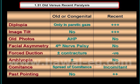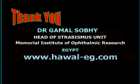In old paralysis, there is a spread of comitance, whereas recent paralysis shows prominent incomitant movements of the eye. Past pointing is a sign of recent paralysis, but it is usually absent in old paralysis.